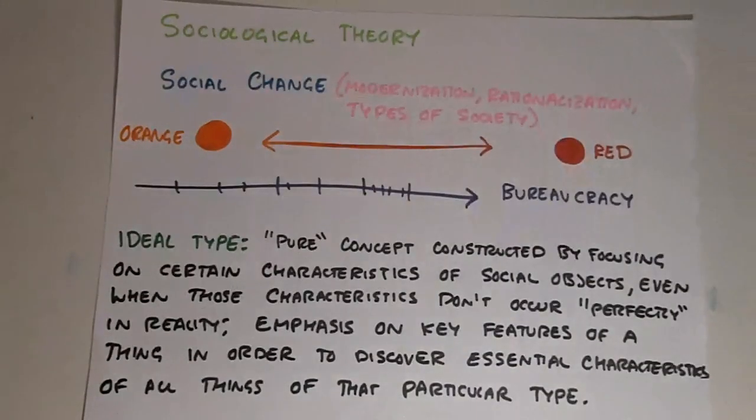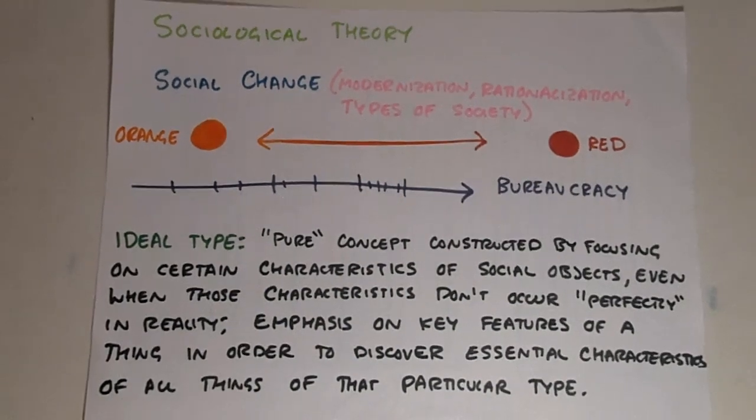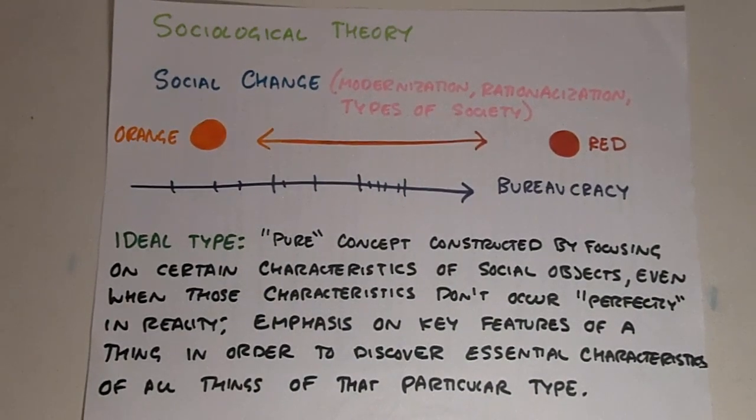Let's end with a definition. An ideal type is a pure concept constructed by focusing on certain characteristics of social objects, even when those characteristics don't occur perfectly in reality. It's an emphasis on key features of a thing in order to discover essential characteristics of all things of that particular type.